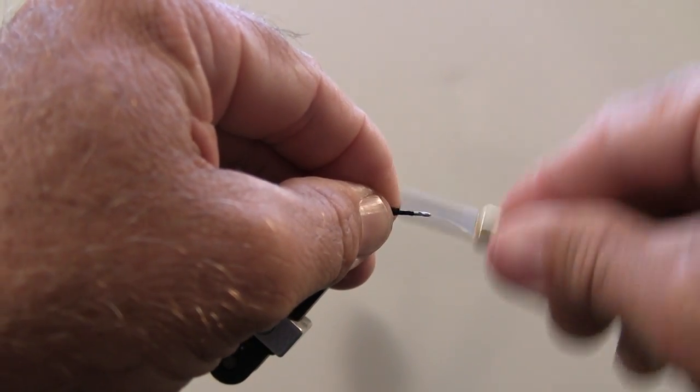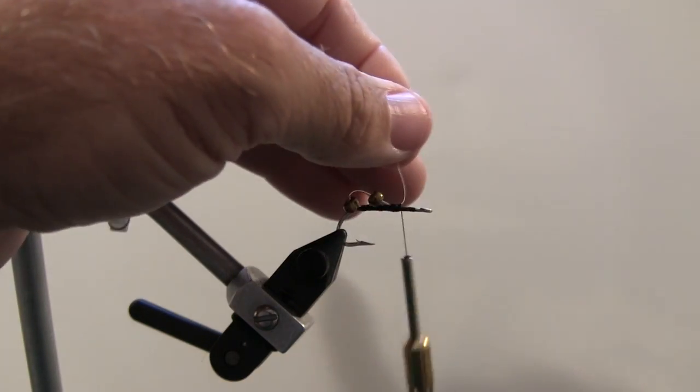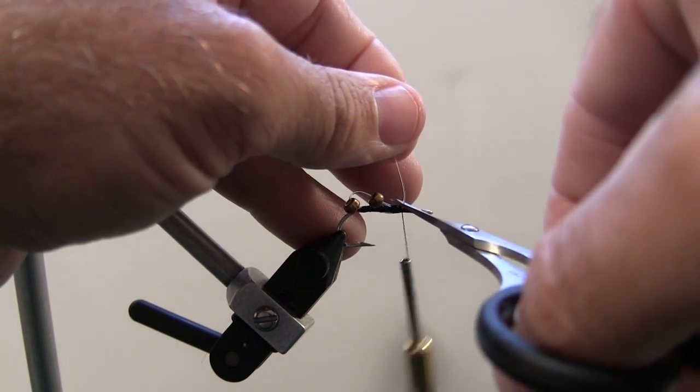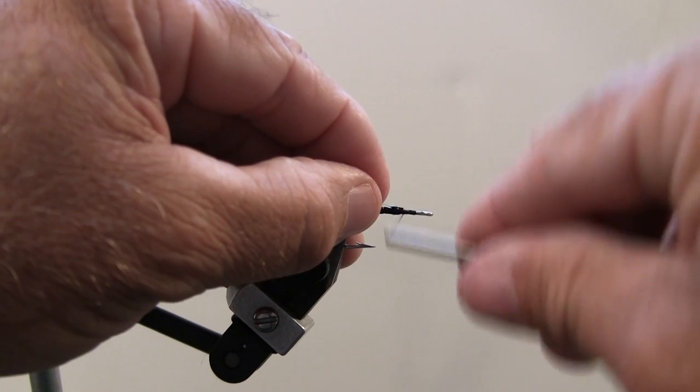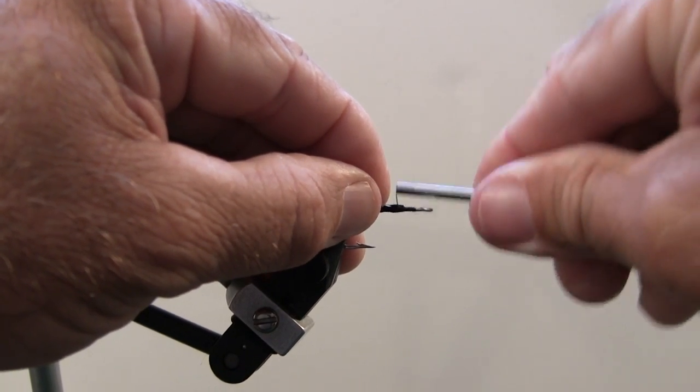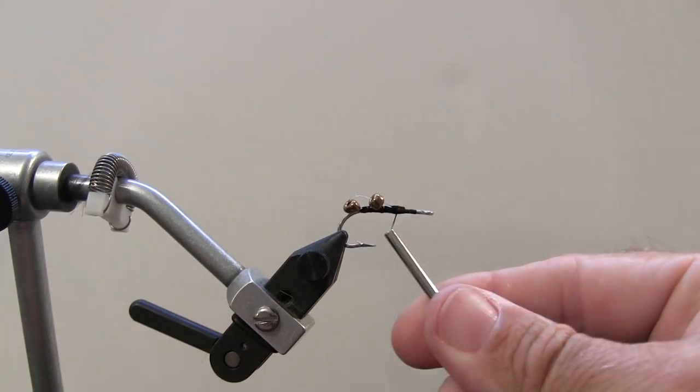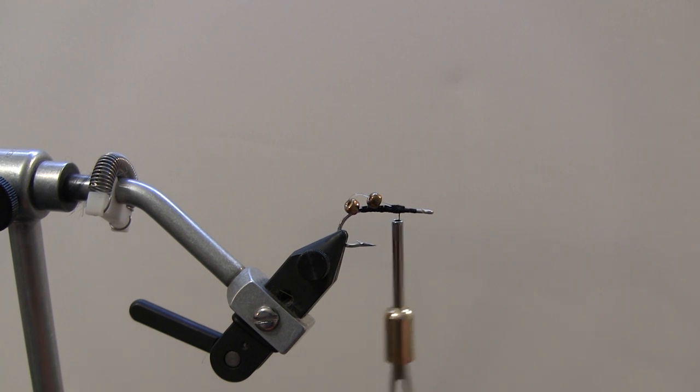Now I can give it a few tighter wraps. Pull this back. Cut it off. Finish winding that in. And then to make it secure, put a little dab of glue right there.